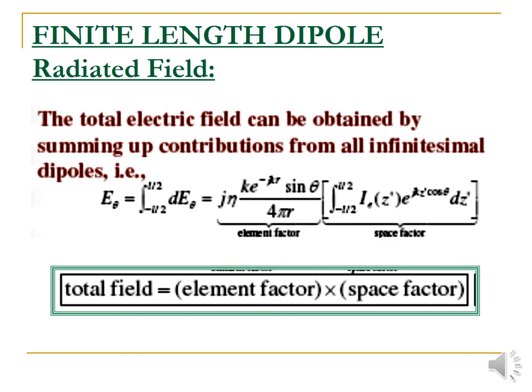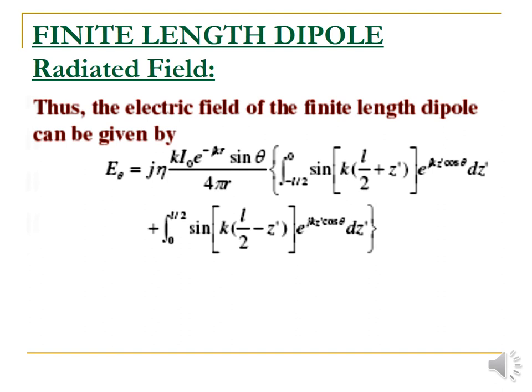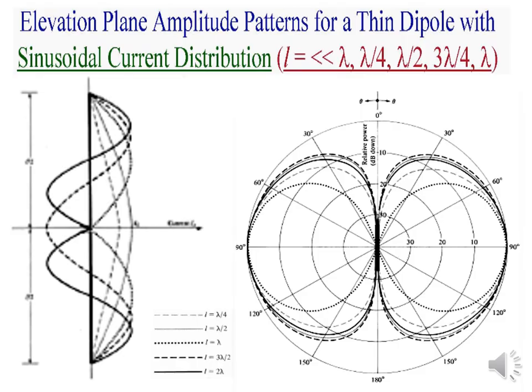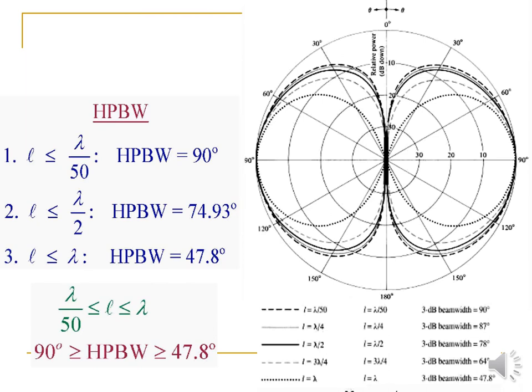Next is the total electric field — nothing but the sum of all contributions from the infinitesimal dipoles. Total field = element factor × space factor. The electric field of the finite length dipole is given by this equation. Considering the sinusoidal current distribution, the elevation plane patterns of the thin dipole are evaluated with L values ranging from lambda/4, lambda/2, 3lambda/4, and lambda, calculating the half power beam width (HPBW) at various lengths.